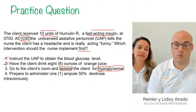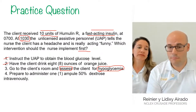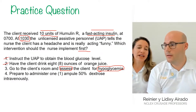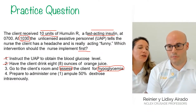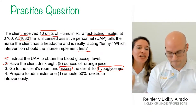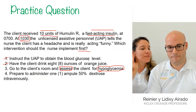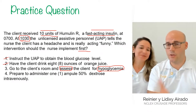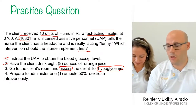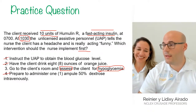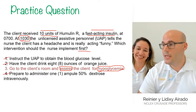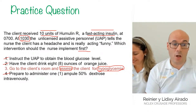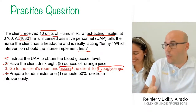Option 4 says administer one ampoule of 50% dextrose intravenously. That is too aggressive. The patient has a headache and is acting funny but is still conscious — we should not be so invasive when oral options like orange juice are available. Also, you would be implementing without having any objective data about what is occurring. Option 4 is eliminated. The correct answer is option 3.